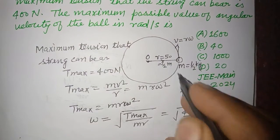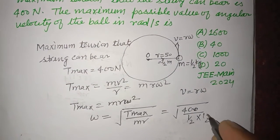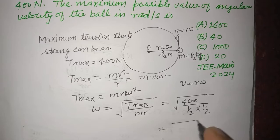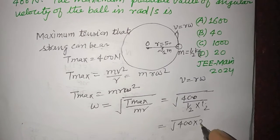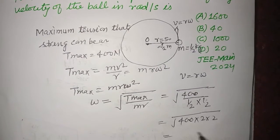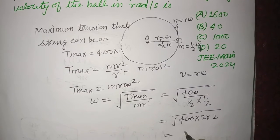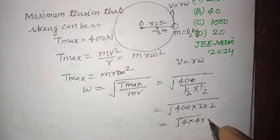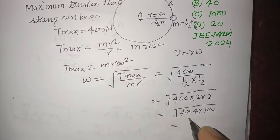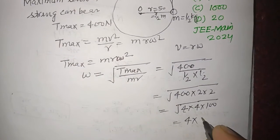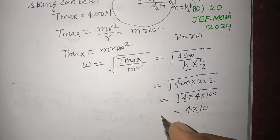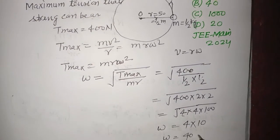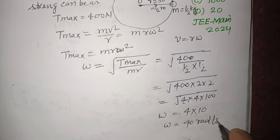And R is also 1 by 2 meter. So from here 400 into 2 into 2, so this is 4 into 4 into 100. So 4, 4, 4 come out, and 100 is 10. So omega equal to 40 radian per second.